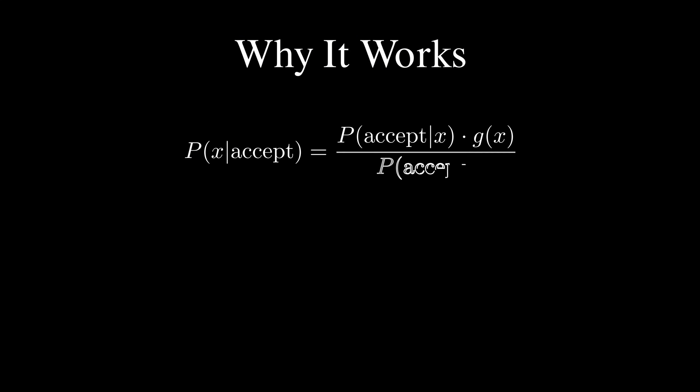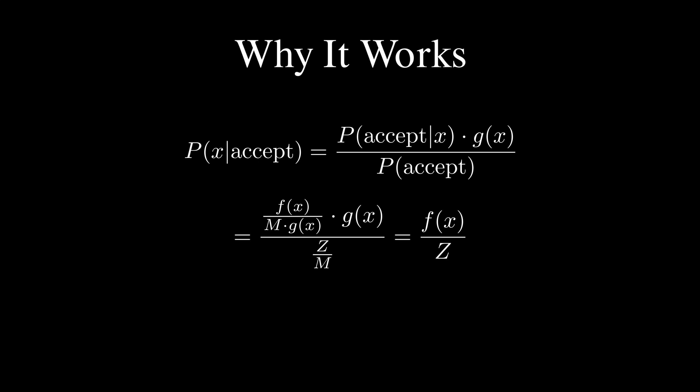Let me show you why this actually gives us samples from our target distribution p, using Bayes' theorem to prove it mathematically. The probability of x, given that we accepted it, equals the probability of accepting given x times g(x), all divided by the probability of accepting. When we substitute our acceptance probability f(x) over m·g(x), the g's cancel, and after working through the algebra with the acceptance probability being z over m, everything simplifies beautifully to f(x) divided by z — which is exactly our target distribution p(x).